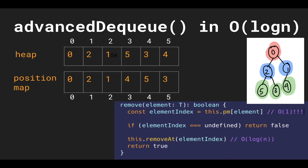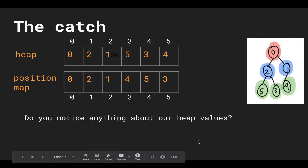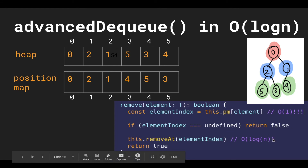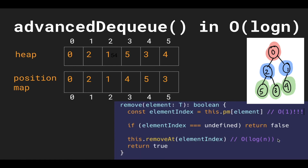Now, considering our position map, we have constant access to our element. All we have to do is index into this.pm at the element. If we want to dequeue 3, we index into the position map and we know immediately it's at index 4. So we tell the removeAt method to remove the value at the 4th index of our heap, and then it does its work. The runtime of remove is no longer dominated by the linear element index search — that lookup is now constant, and the main work is log n, because we potentially have to sink or swim the element that gets swapped with 3.